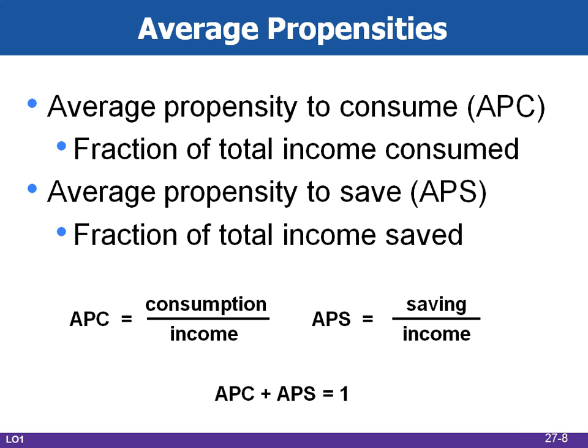The average propensity to consume, or APC, is the fraction or percentage of income consumed: APC equals consumption divided by income. Multiplying by 100 expresses this as a percentage — see column 4 in table 27.1. The average propensity to save, APS, is the fraction or percentage of income saved: APS equals savings divided by income. Multiplying by 100 again expresses it as a percentage, shown in column 5 of the table.